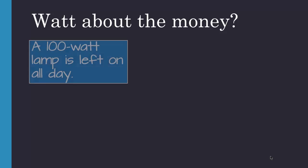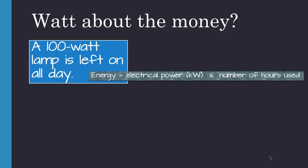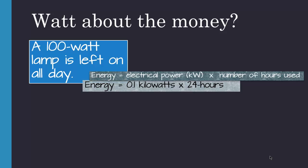What about the money? Well, let's say we have a hundred watt lamp and it's left on all day. So we have energy equals electrical power times the number of hours used. So the energy is going to equal 0.1 kilowatts times 24 hours, because remember we're leaving the lamp on all day.